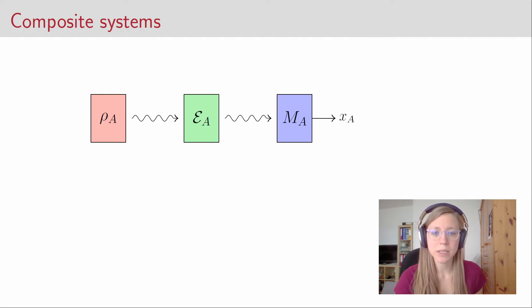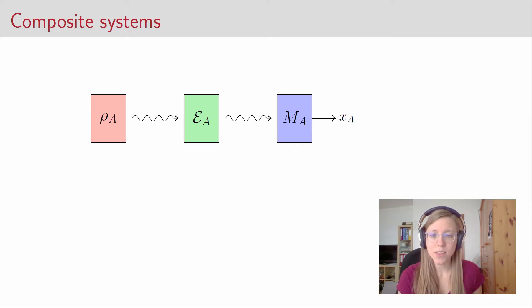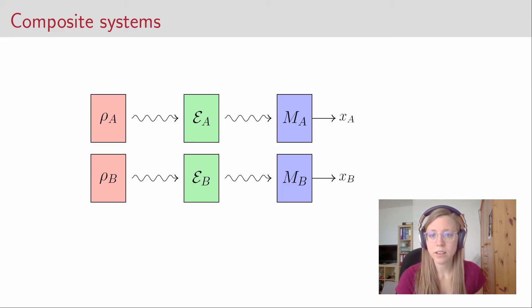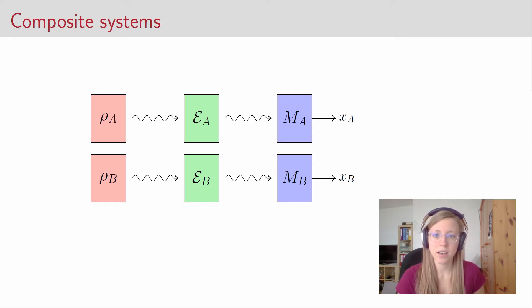This is the picture of a general quantum experiment that we discussed in the last video. Suppose now that this is the situation in Alice's lab: she prepares a quantum state rho_A, sends it through a quantum channel E_A, and finally measures with measurement M_A to get the classical outcome x_A. In addition, Bob has the exact same situation in his lab — he prepares rho_B, sends it through channel E_B, and measures with M_B. These are two completely independent quantum experiments that do not influence each other in any way.